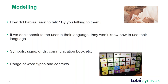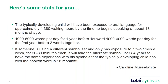How do babies learn to talk? Because we talk to them. Babies hear language around them constantly from birth. AAC is just like that. A typically developing child will have been exposed to oral language for approximately 4,380 waking hours by the time they begin speaking at about 18 months — that translates to four to six thousand words per day for the first year before they speak their first word, and four to six thousand words per day for the second year before they start stringing two words together.